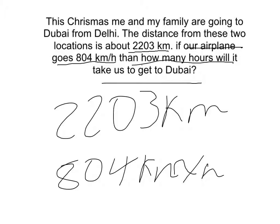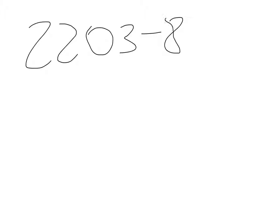So we're trying to find out how many times 804 fits into 2,203, making this a division question. So now that we know the question is 2,203 divided by 804 equals something, let's answer it using the partial quotients algorithm.